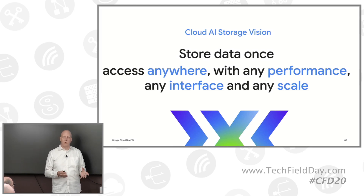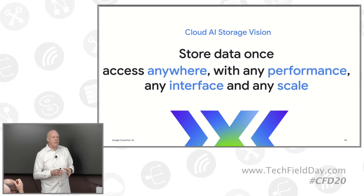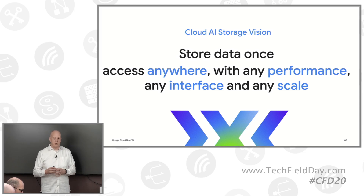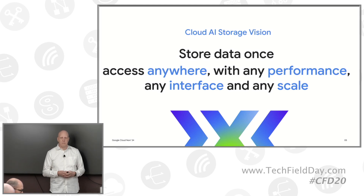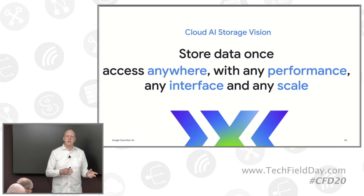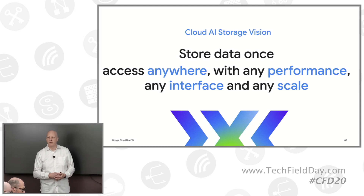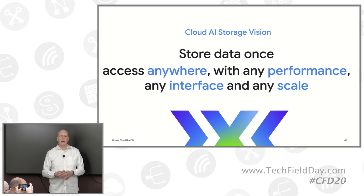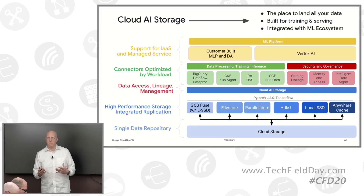There are a couple of things that are important. Number one, access anywhere — we want to provide customers the ability to get the data and store the data in any region within a continent and move that data as close to the GPU and TPU resources as possible. We want to give them the ability to scale performance from gigabytes per second of throughput to terabits per second, as well as use the interface they need. How do you adapt an object store to handle file interfaces? And any scale from gigabytes to petabytes or even exabytes — we want to give customers that ability to choose what and how they want to train their models.